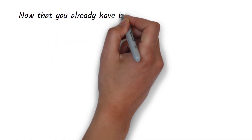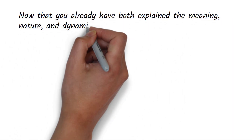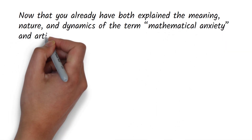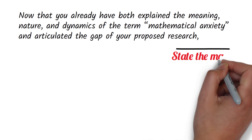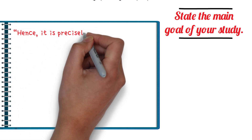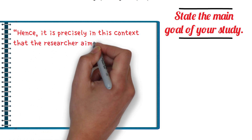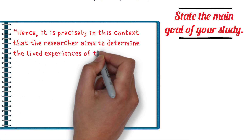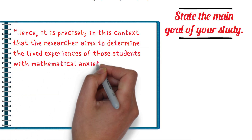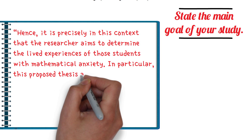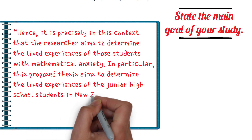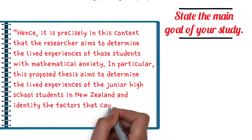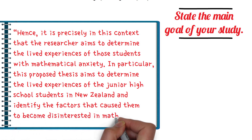Now that you have both explained the meaning, nature, and dynamics of the term mathematical anxiety, and articulated the gap of your proposed research, you may now state the main goal of your study. You may say: 'Hence, it is precisely in this context that the researcher aims to determine the lived experiences of those students with mathematical anxiety. In particular, this proposed thesis aims to determine the lived experiences of junior high school students in New Zealand and identify the factors that caused them to become disinterested in mathematics.'